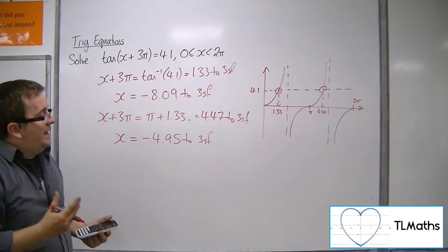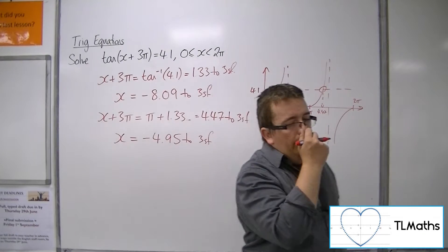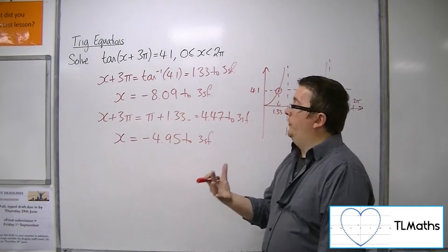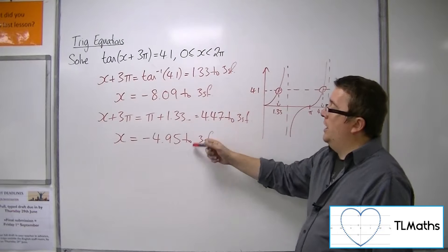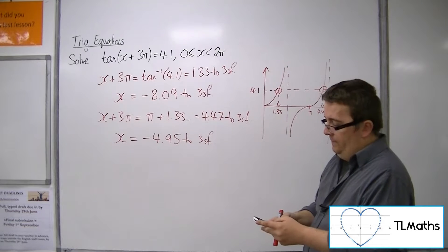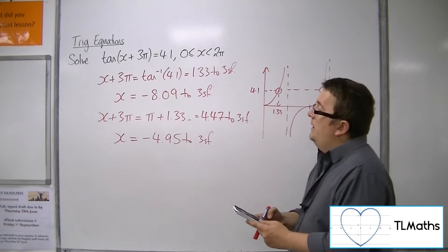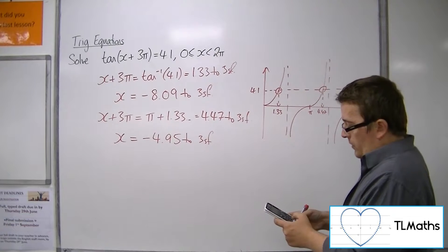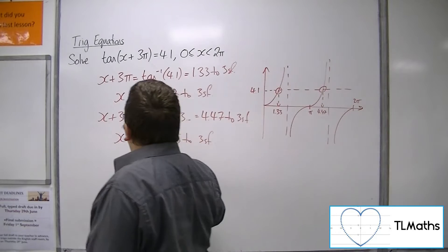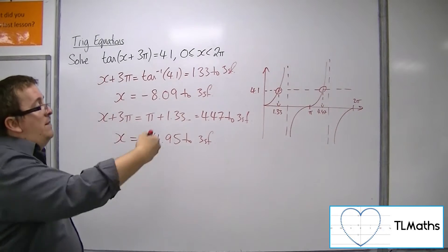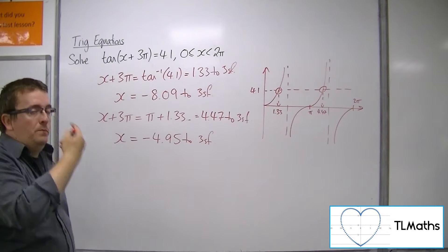So now the thing is, in order to get solutions that are between 0 and 2π, which neither of these are, what I'd then want to do is add on π progressively in order to get myself solutions between 0 and 2π.